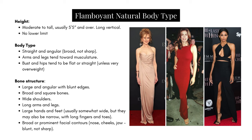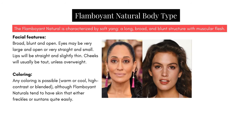Broader prominent facial contours are seen in the nose, cheeks, and jawline. The key feature of the Flamboyant Natural is what we describe as Kibbe width — there is an openness to their features. The Dramatic is long and lean and narrow, like a very thin straight line, while the Flamboyant Natural is a straight line but a thicker one, so there's width to it.